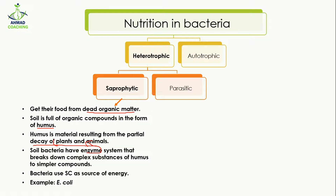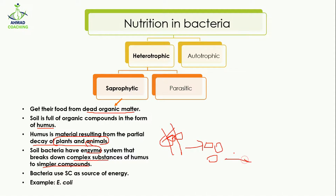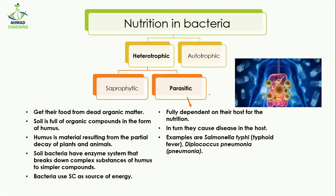Soil bacteria work on those dead animals and plants, and using their enzymes they digest them, breaking down their complex substances into simpler compounds. The saprophytic bacteria then utilize these simpler substances to make their own organic food, which serves as the source of their energy. An example of saprophytic bacteria is E. coli.